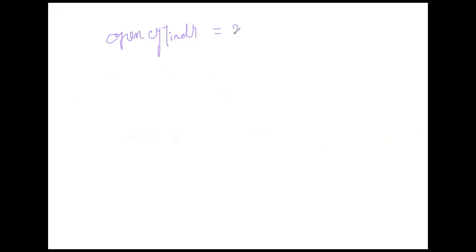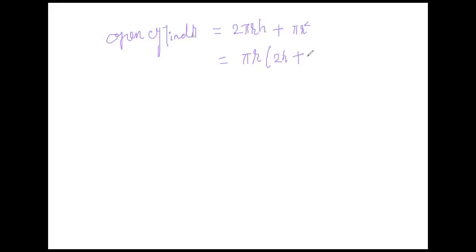So we will write 2πrh. And since the cylinder is open, that means the upper face is not there, but the lower face is circular. So we will write the area of one circle only. The formula will be derived like this — it is customized, which we are deriving according to the question. So this is πr, and taking common we will be having 2h as common in the first term and r in the second term. So you can say the total surface area of open cylinder is πr(2h + r) square units.